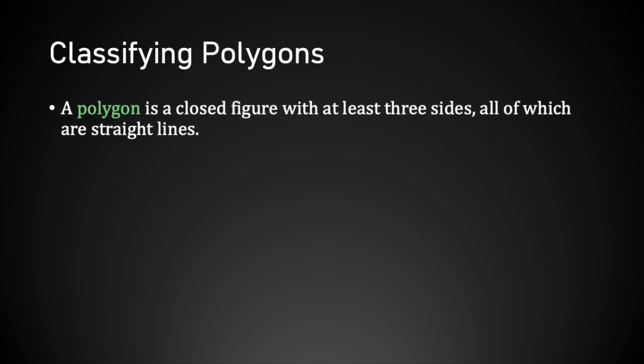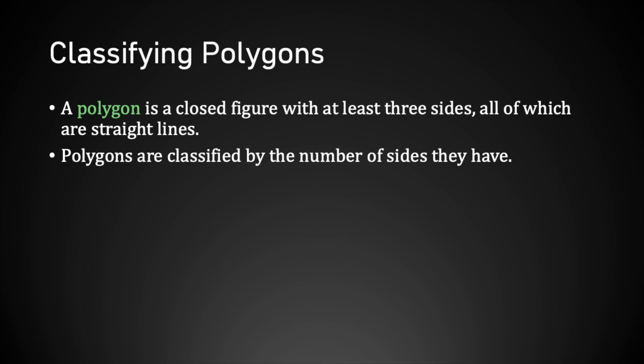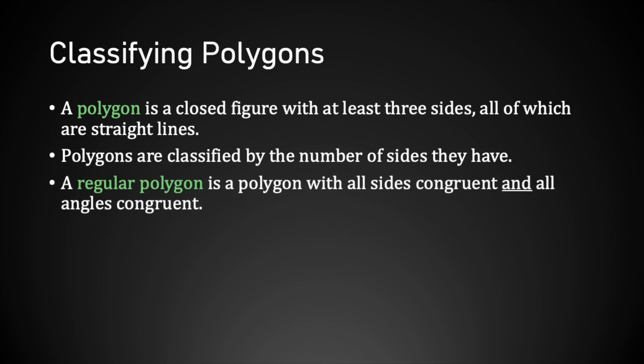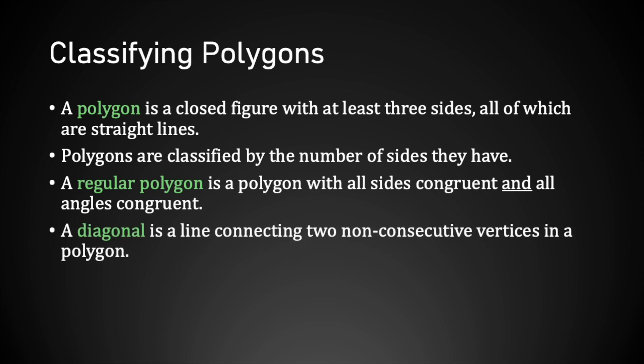A polygon is a closed figure with at least three sides, all of which are straight lines. When we say closed, we just mean that if you trace a polygon with your pencil, you'll eventually end up back at your starting point. Polygons are classified by the number of sides they have. A regular polygon is a polygon with all sides congruent and all angles congruent. And a diagonal is a line connecting two non-consecutive vertices in a polygon.